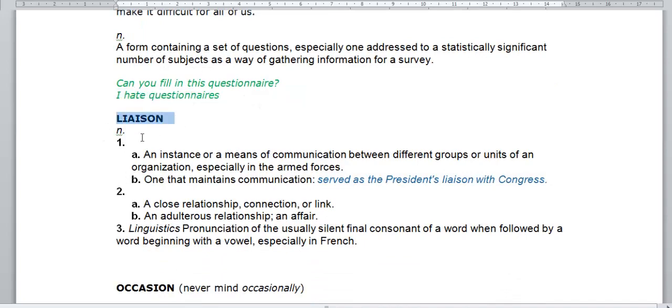Liaison is a noun. It is an instance or means of communication between different groups or units of an organization. It is a way of communication.